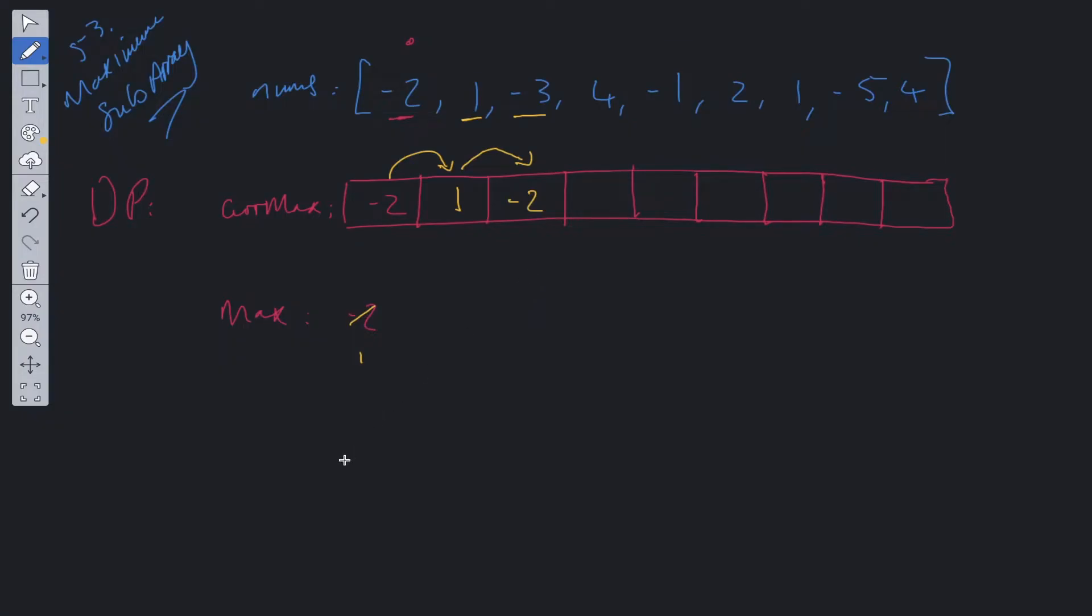And that is the recurrence relation of this DP program. So current max is going to be equal to maximum between nums at i, or current max plus nums at i. And this will then be used to computate the rest of the current maxes. And as you can see, we're going to be updating the max as we go along, and then we'll be able to return the maximum.